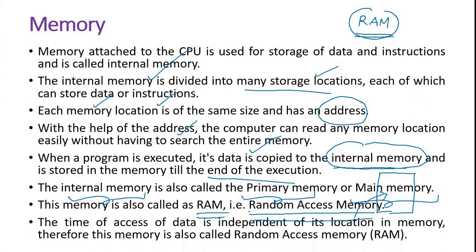Why is it called random access memory? The time of access of data is independent of its location in memory — that is why it is called random access memory. You can access any location at any time, independent of its position. So, to summarize, we discussed the input unit, then the processing side — CPU — which has three important units: arithmetic logic unit, control unit, and memory unit. In memory, you have registers and the main memory.